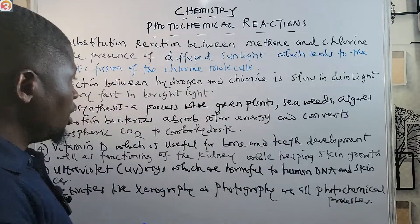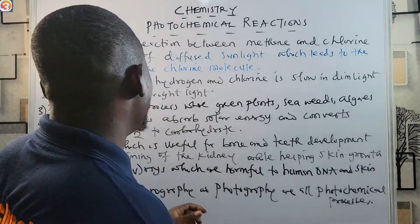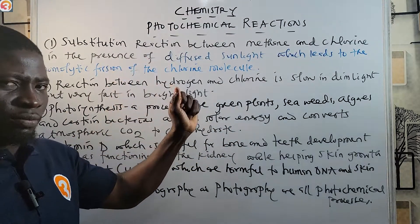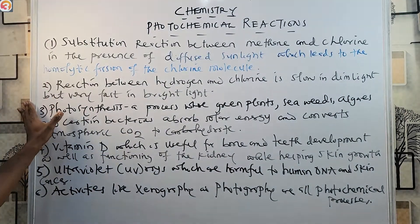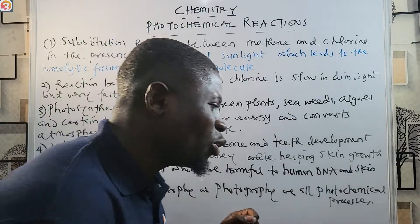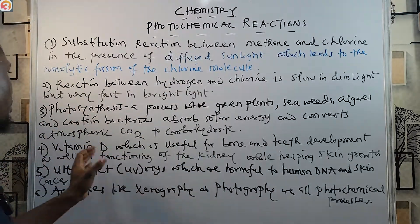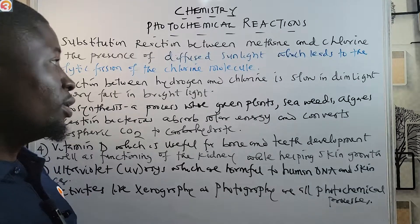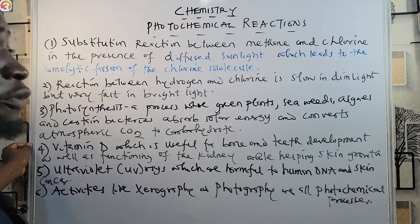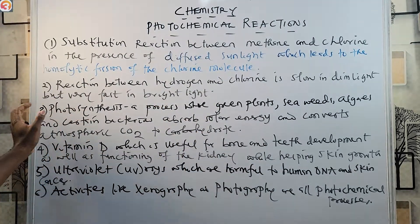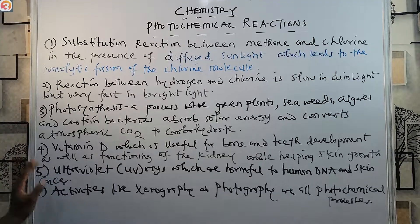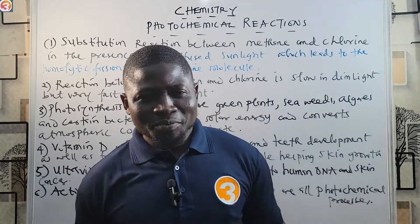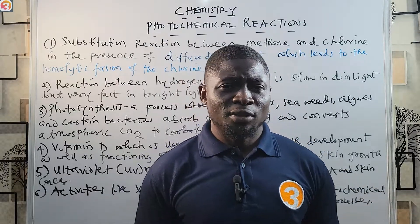To recap: the substitution reaction between methane and chlorine in the presence of diffuse sunlight leads to homolytic fission of the chlorine molecule. The reaction between hydrogen and chlorine is slow in dim light and very fast in bright light. Photosynthesis, vitamin D production, UV rays, and daily activities like xerography and photography are all photochemical processes.